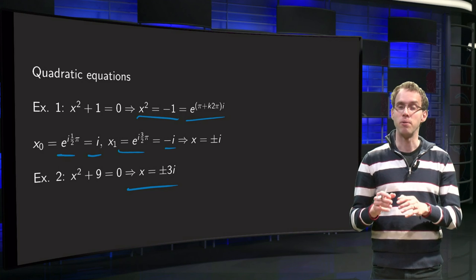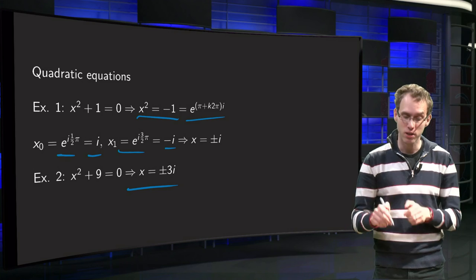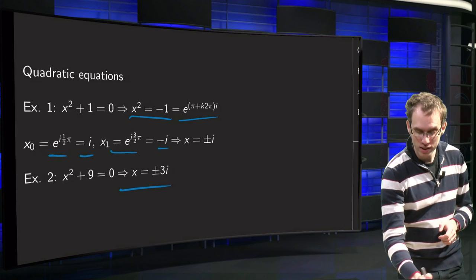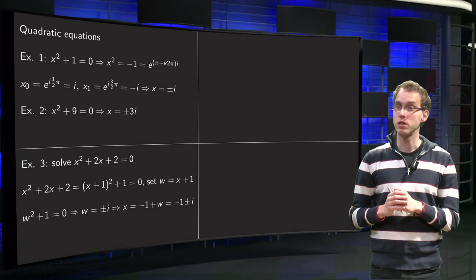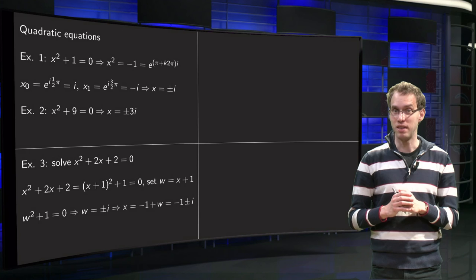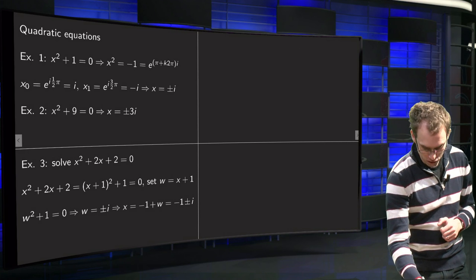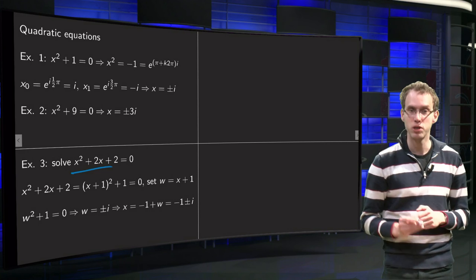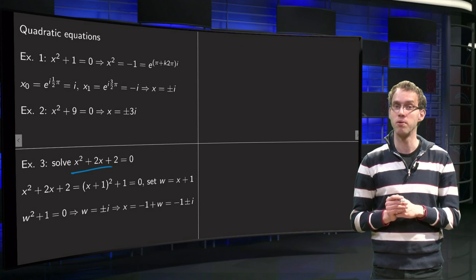So you can now solve quadratic equations as long as they don't have a linear term. But what if they do have a linear term, like x squared plus 2x plus 2 equals 0?